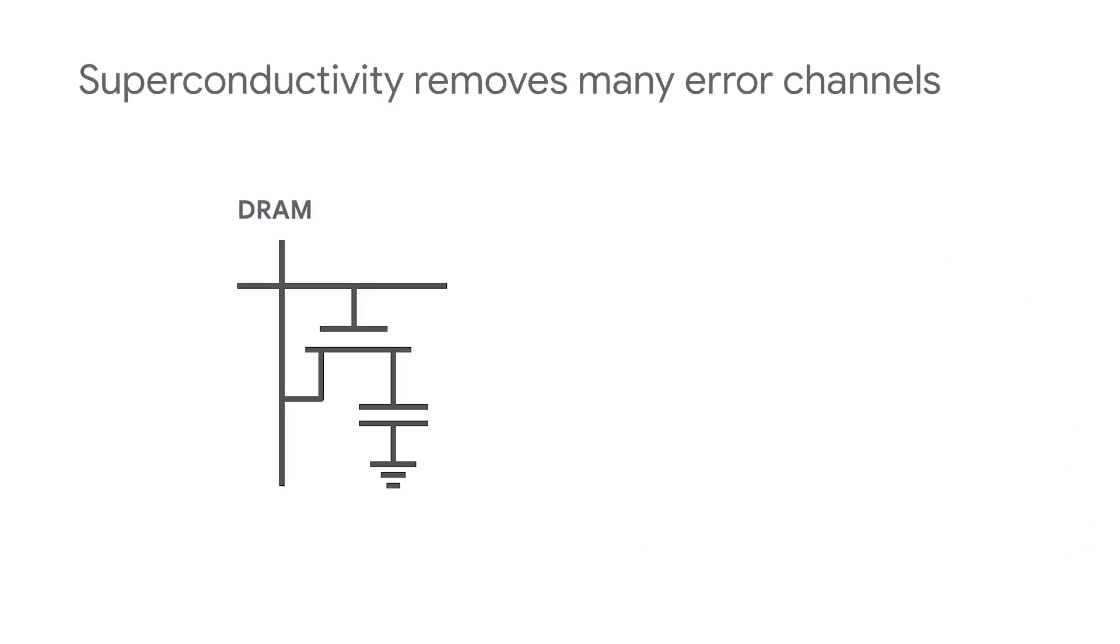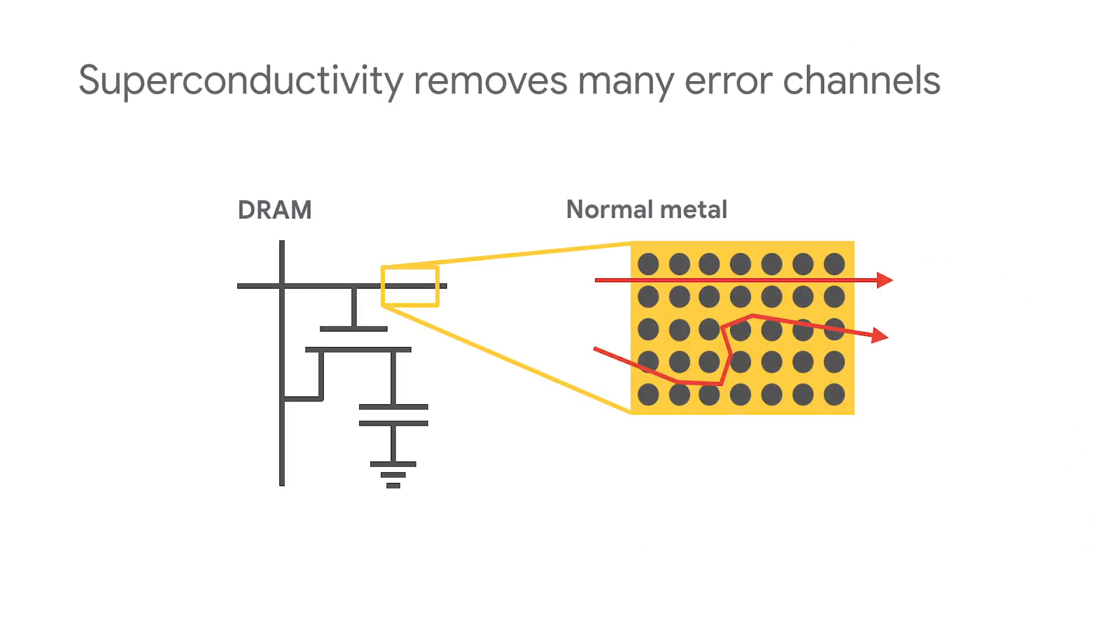In regular metals, like with a conventional DRAM circuit, every individual electron does its own thing. As electrons move around, they can bounce off the positively charged ions of the metal, radiating vibrational waves that carry off quantum information about the electrons. This hectic, bustling cauldron of physical interactions generates a lot of quantum errors, and the information gets lost before we can use it.